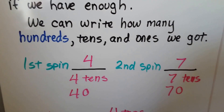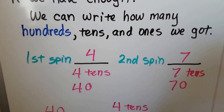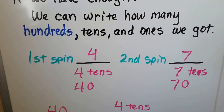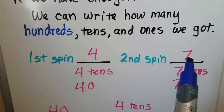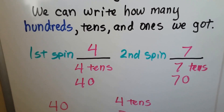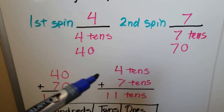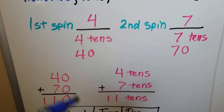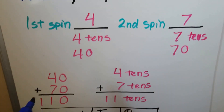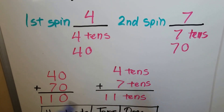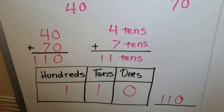So if I got a four on the first spin, that would mean four tens. Then I spin again and if it landed on the seven, that would be seven tens. I can add four tens plus seven tens to get eleven tens — or forty plus seventy, which is the same thing — to get a hundred and ten. We can write it in each place value correctly.